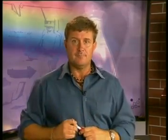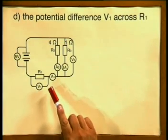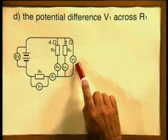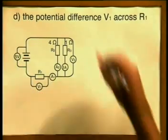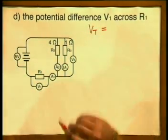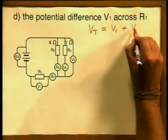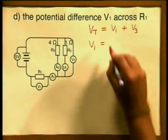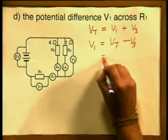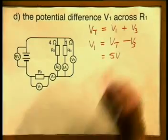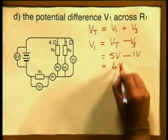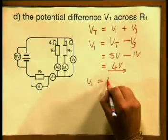And now for part D, the potential difference V1 across resistor R1. The total potential difference applied by the battery equals V1 plus V3. To calculate V1, we rearrange: V1 equals V total minus V3. V total is equal to 5 volts, minus the 1 volt we calculated earlier, gives us a reading of 4 volts. Therefore, V1 will equal 4 volts.